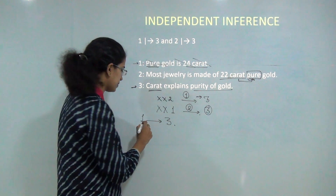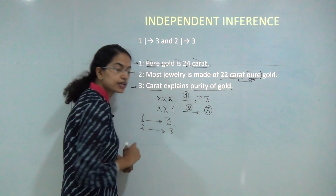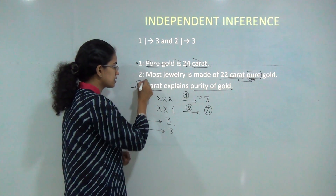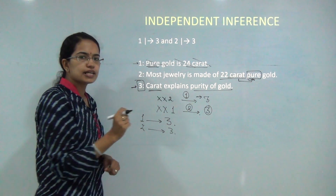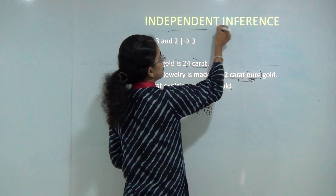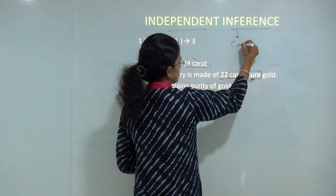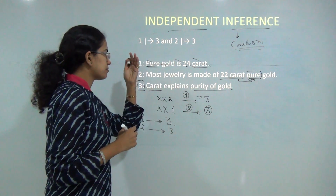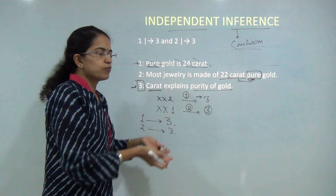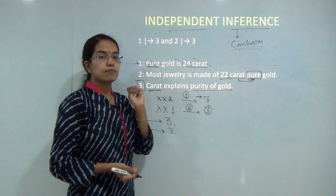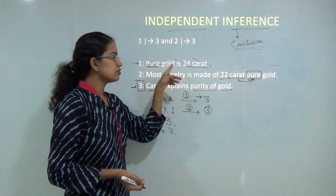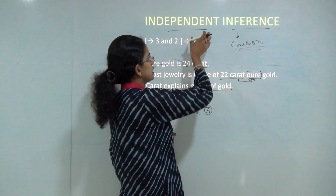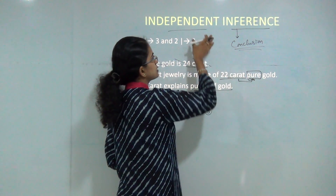This means both premises are independently influencing the conclusion. If I have just premise 1 alone, my conclusion would be correct. If I have just premise 2 alone, my conclusion would also be correct. This means both premises are independently influencing the conclusion, and this is known as independent inference. I can independently reach a conclusion with either premise 1 or premise 2.